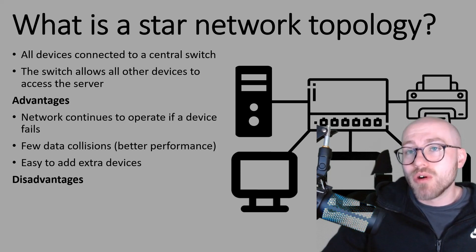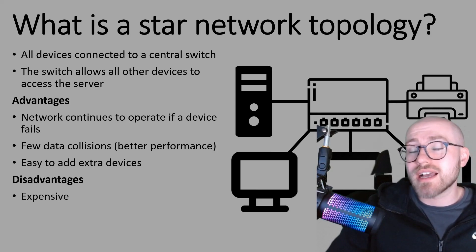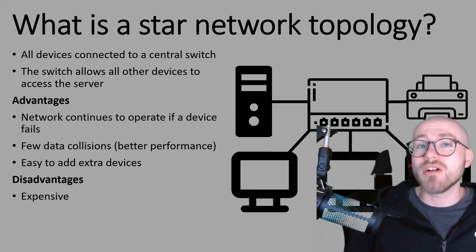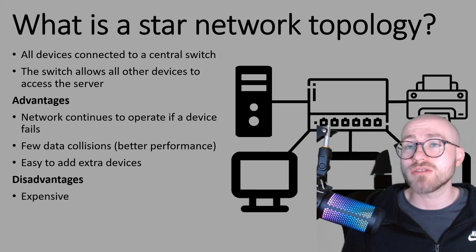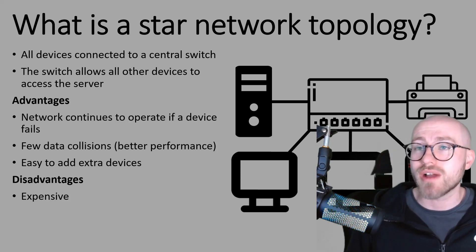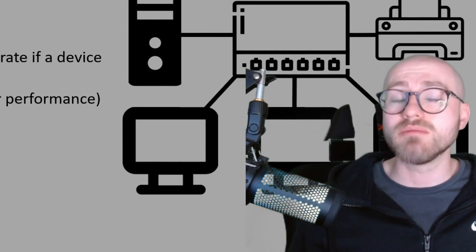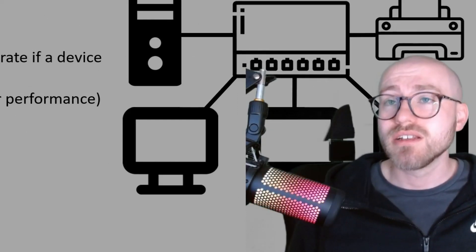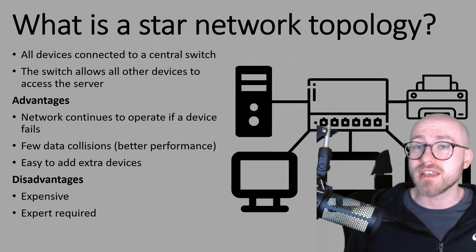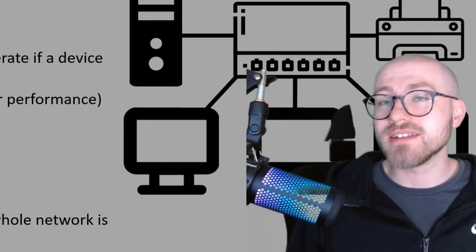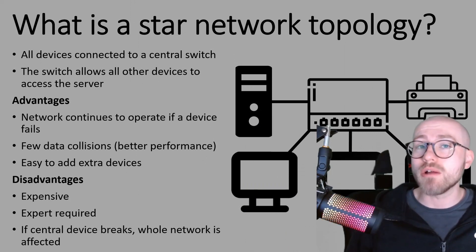You may also be asked for the disadvantages of a star network topology. First, it's actually quite expensive — you've got a lot of cabling, network hardware, and you'll need to pay a technician to maintain the network. As a separate disadvantage, an expert is required; if you had a very small business you may not want to employ someone to operate the network for you, and you'd need extra training to maintain it. Finally, if the central device — the switch or hub — breaks, the whole network will stop working.